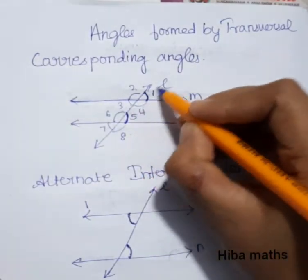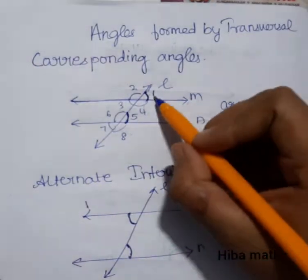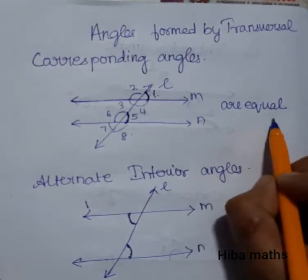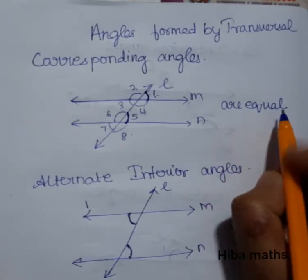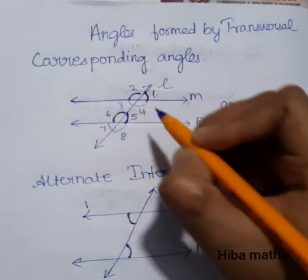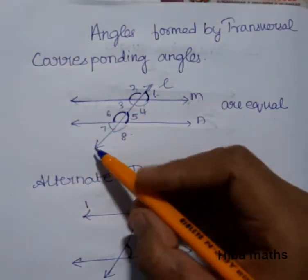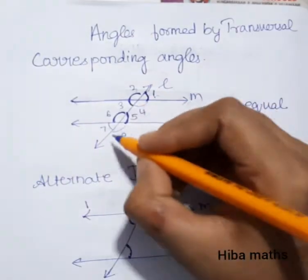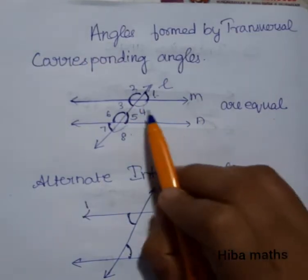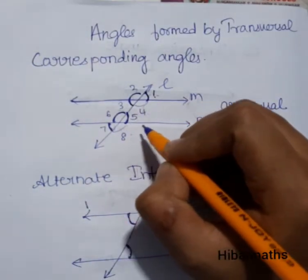Looking at the corresponding angles: angles 1 and 5 are corresponding angles, and they are equal. Corresponding angles are always equal. Similarly, angles 2 and 6 are corresponding angles and are equal. Angles 3 and 7 are also corresponding angles and are equal.